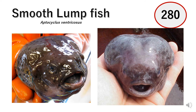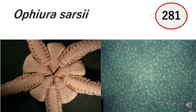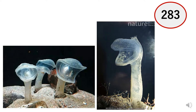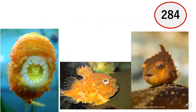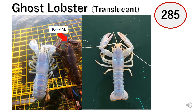Smooth lumpfish. Ophiura sarsi. Harp comb jelly. Predatory tunicate. Pacific spiny lump sucker. Ghost lobster.